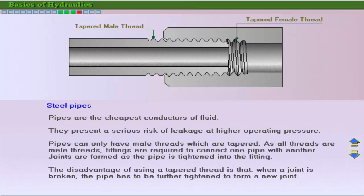As a result, pipes and tapered thread are being slowly replaced with tubing and hose utilizing positive seal type fittings with SAE straight threads or ISO 6149 straight threads.